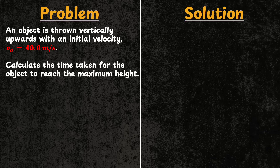We have a problem here that says an object is thrown vertically upwards with an initial velocity v₀ equals 40.0 meters per second, and we are to calculate the time taken for the object to reach the maximum height.